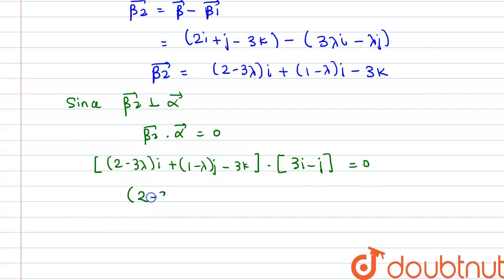So we have here 2 minus 3 lambda times 3 minus 1 minus lambda. This will be equal to 0.